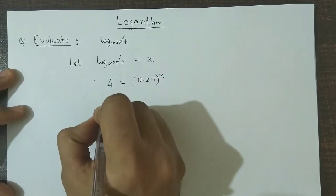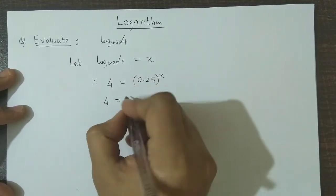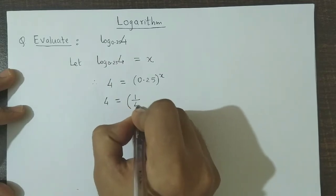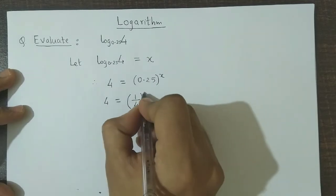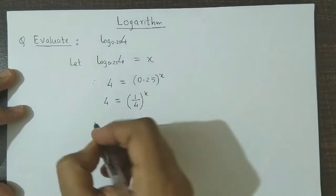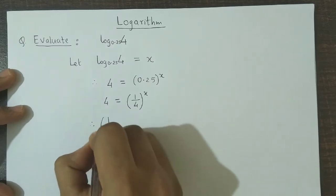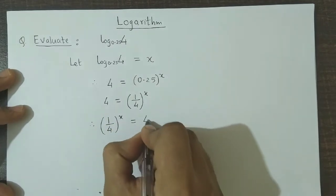Further, this could be written as 4 is equal to 0.25, which is nothing but 1 by 4. So we replace 0.25 by 1 by 4 raised to x. So therefore we could say 1 by 4 raised to x is equal to 4.